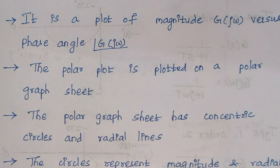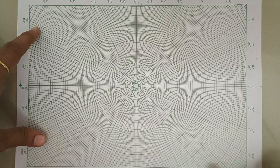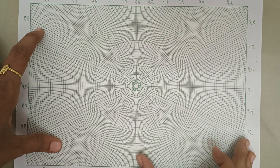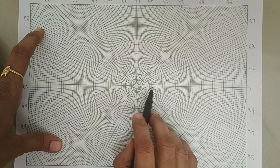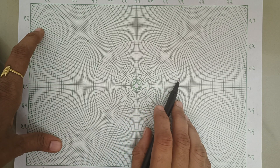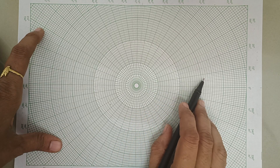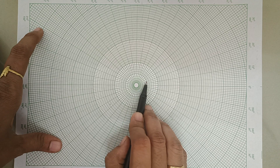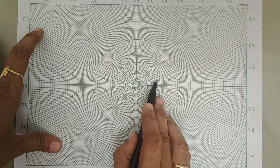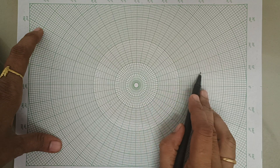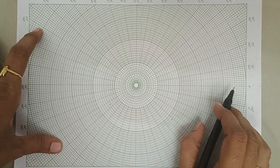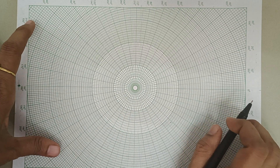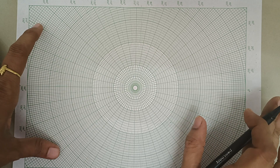Let me show you the sheet. This is our polar sheet. When you observe carefully, you see the polar sheet has concentric circles. You can see here one circle, another circle, and it goes on. It has concentric circles — that is, circles having the same center but different radius.